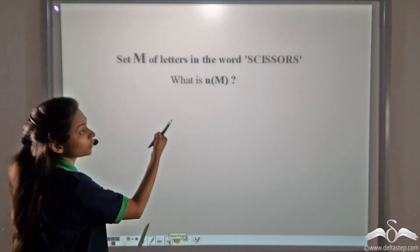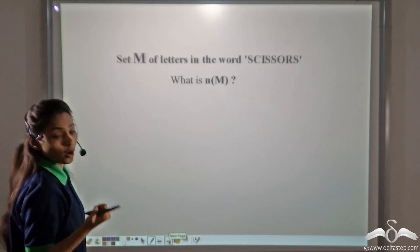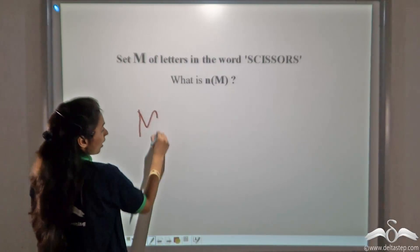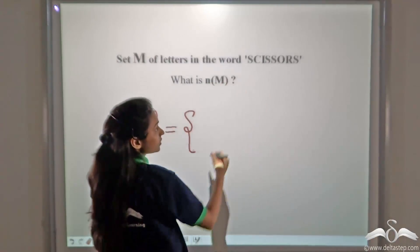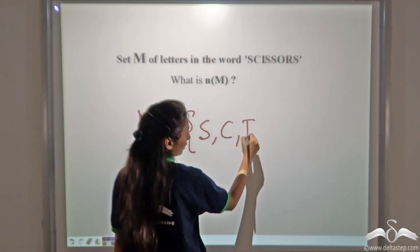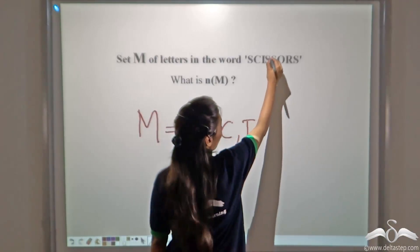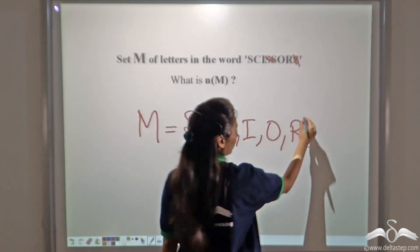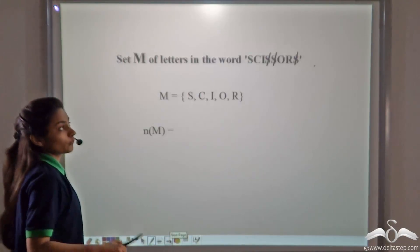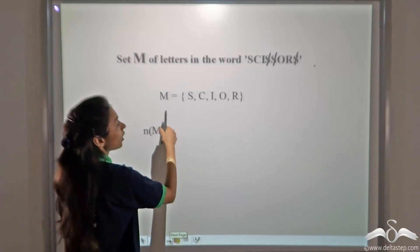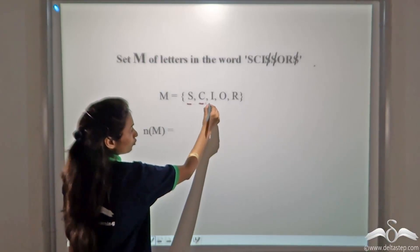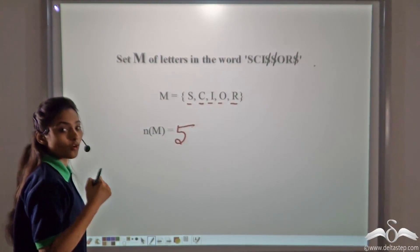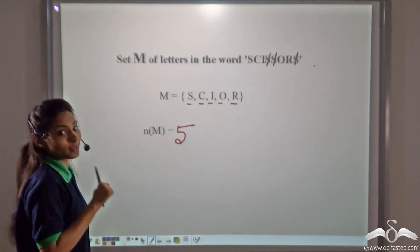Now, set M is the set of letters in the word 'scissors'. What is n(M), or the cardinal number of M? First, let's write the set M. M = {S, C, I, O, R} — we do not repeat duplicate letters. So S appears multiple times in 'scissors' but we write it only once. M = {S, C, I, O, R}. Count the number of elements: 1, 2, 3, 4, 5. So the cardinal number of set M is 5. To summarize, the cardinal number is the number of distinct elements in a set.